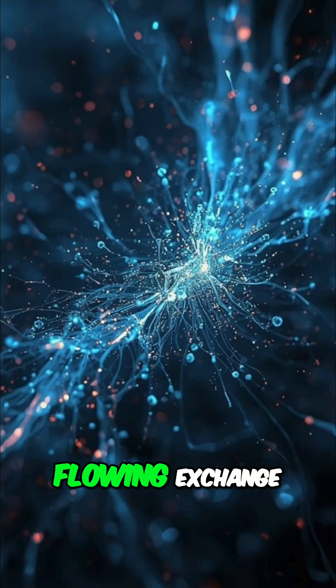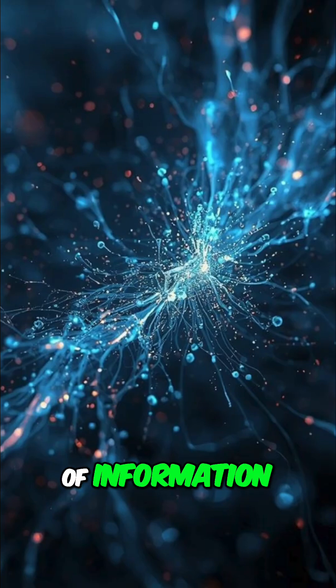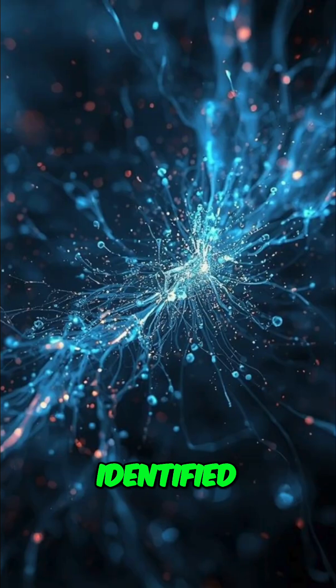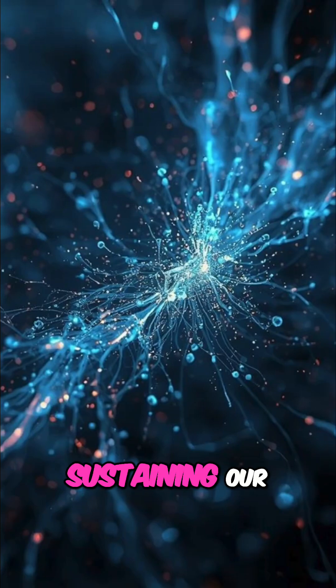It's a constant flowing exchange of information across vast networks in the brain. Recent studies using high-resolution scans have identified networks linking the brainstem, thalamus, and cortex that are critical for sustaining our state of being awake and aware.